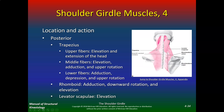For the trapezius posteriorly: upper fibers do elevation and extension of the head; middle fibers do elevation, abduction, and upward rotation; lower fibers do adduction, depression, and upward rotation. Rhomboids do adduction, downward rotation, and elevation. Levator scapulae does elevation. Knowing the actions of all these muscles is what you really want to know and what you study for this exam.